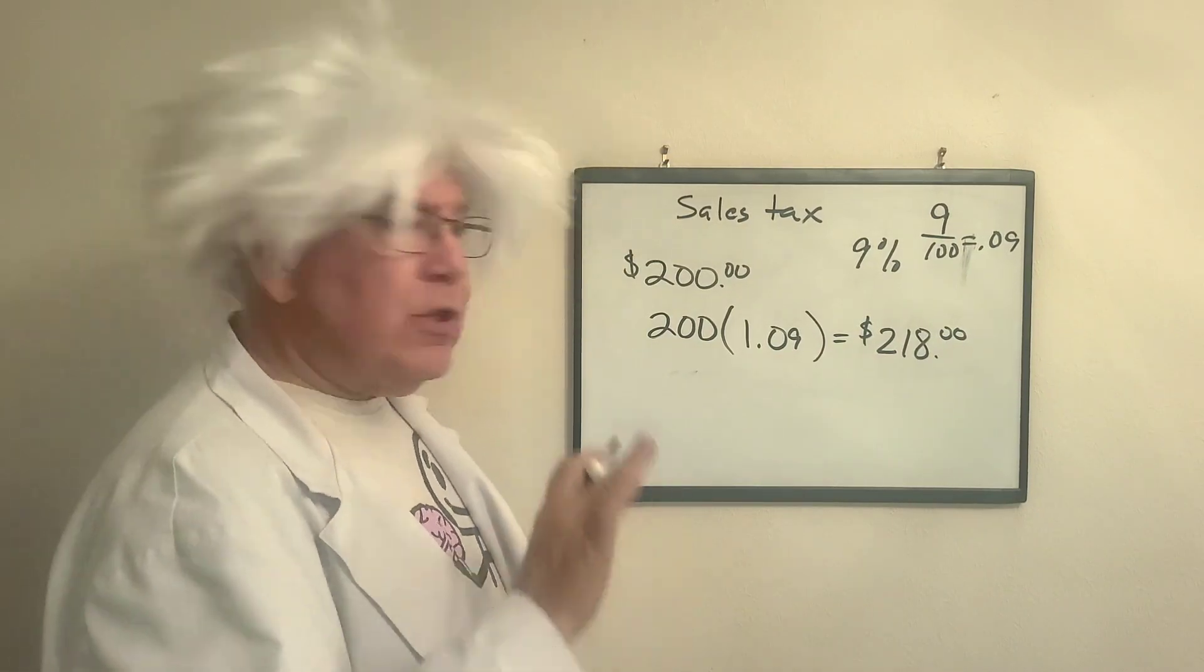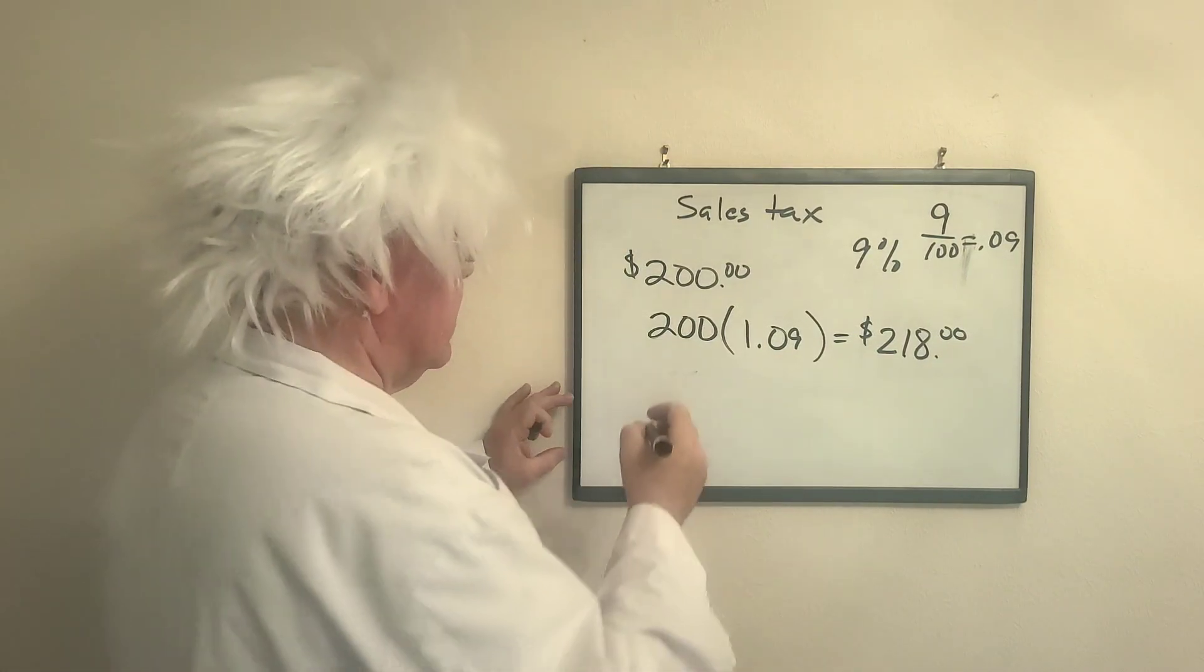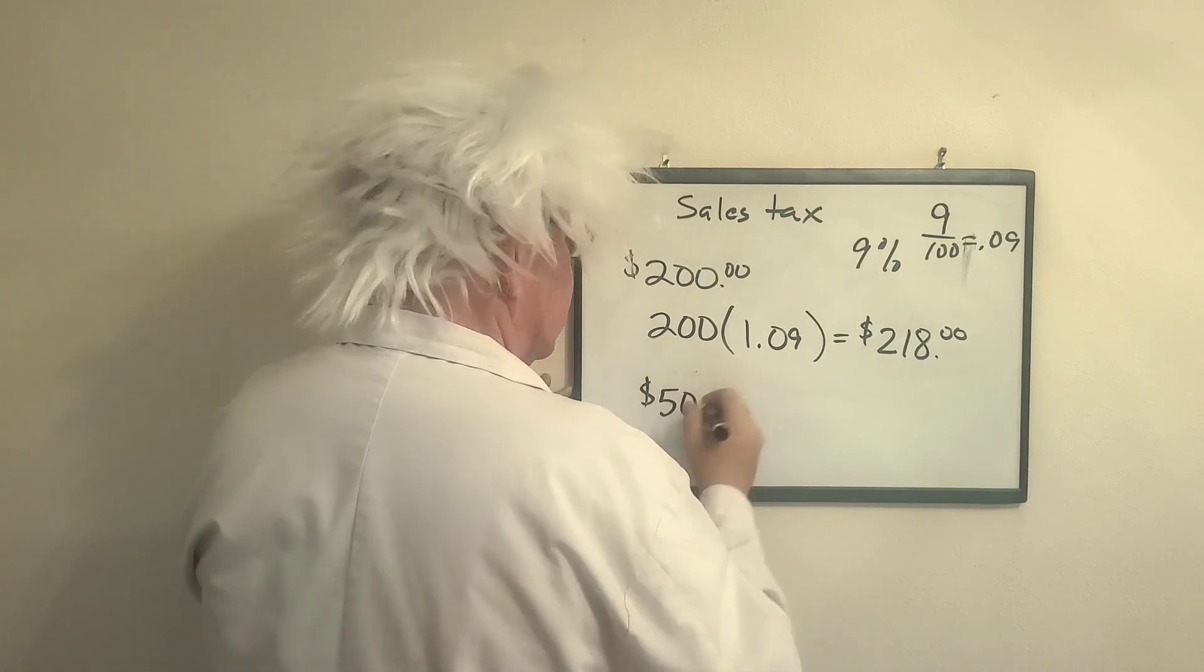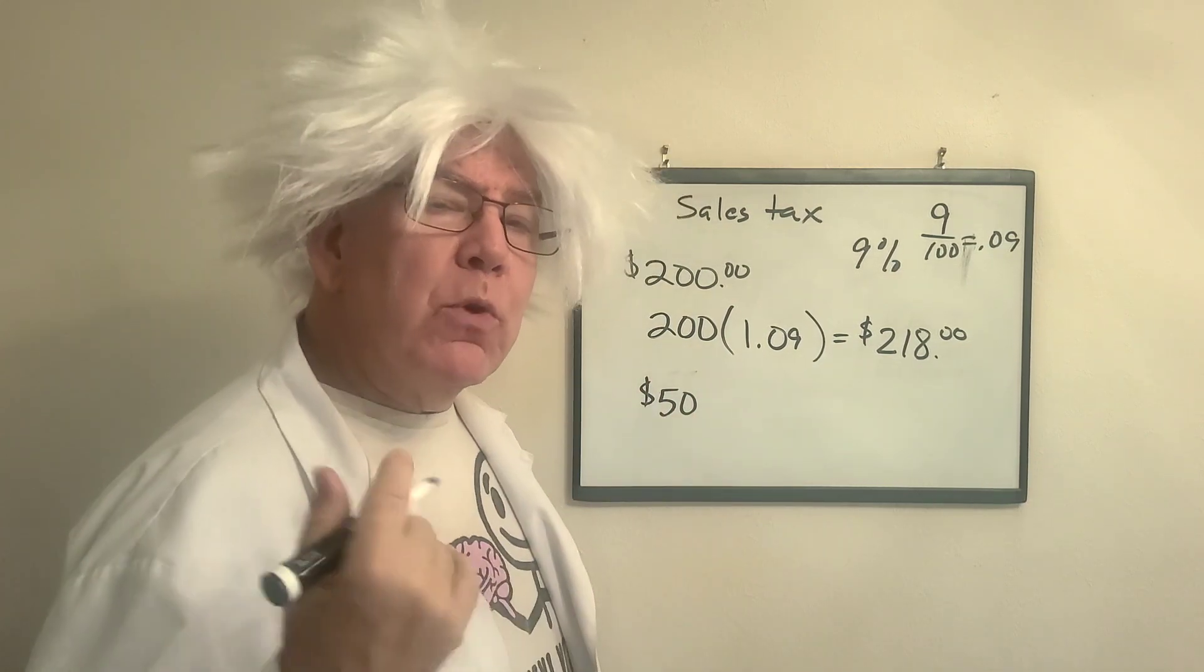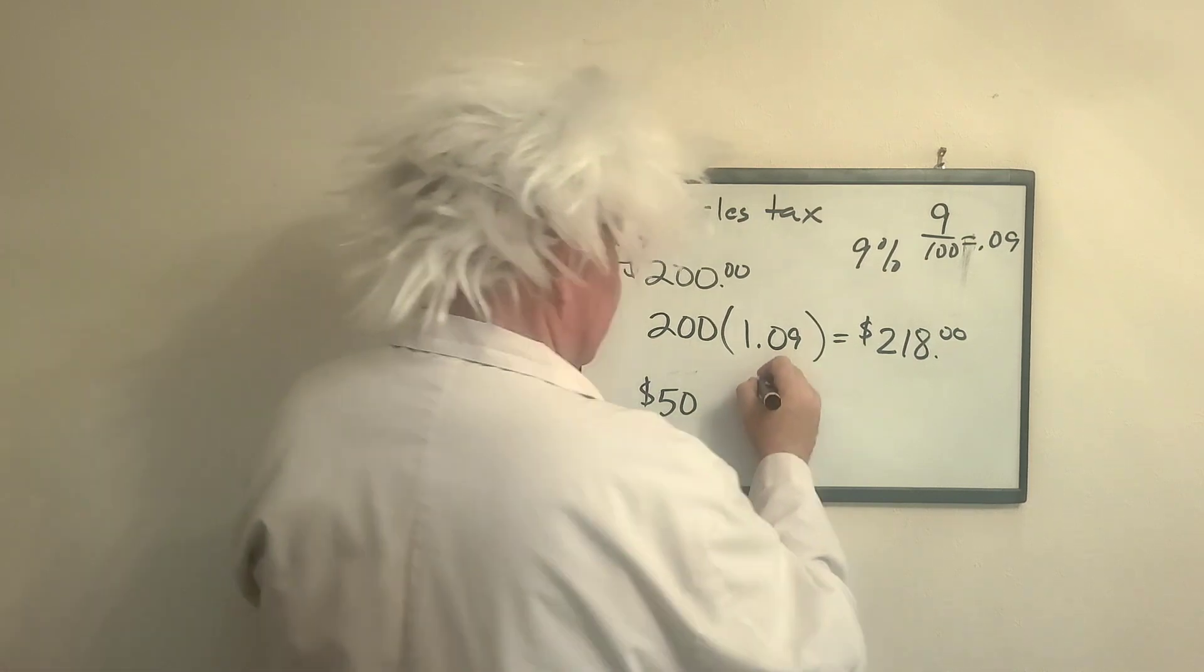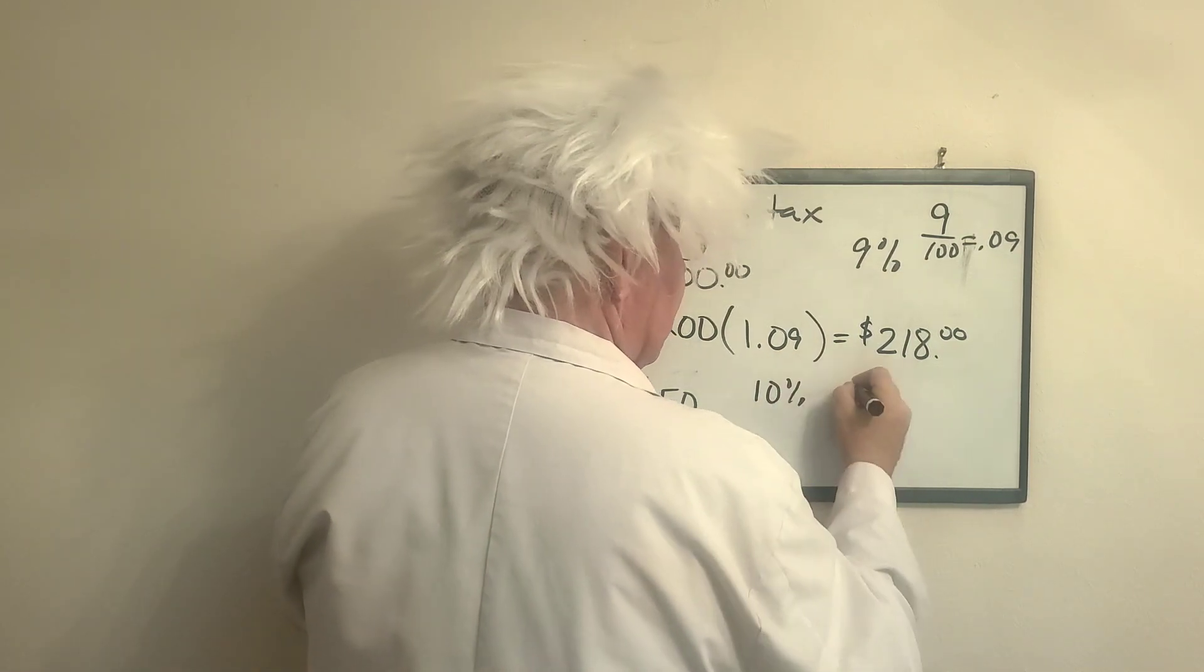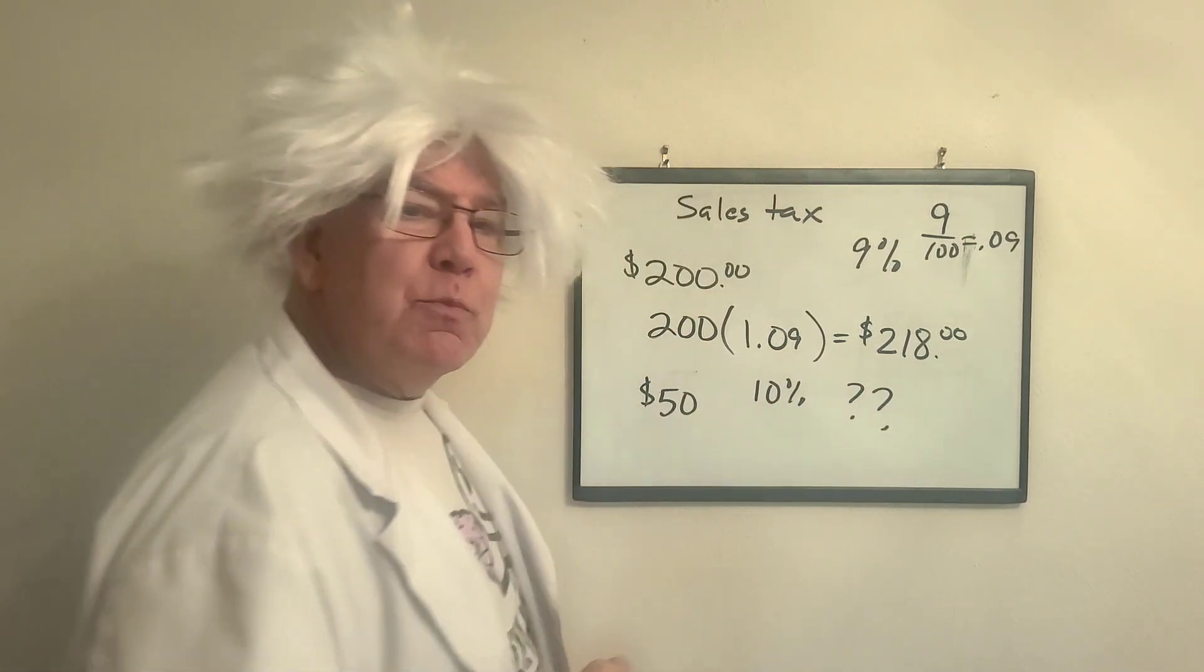Now, this works every single time. So let me give you one. You have $50 worth of stuff. Now, this time, we're going to go with the 10% tax. How much money do you spend?